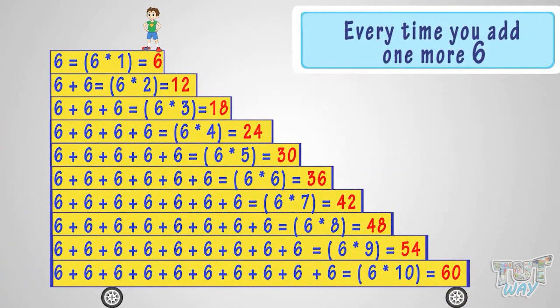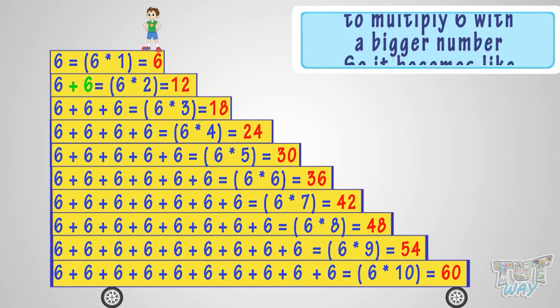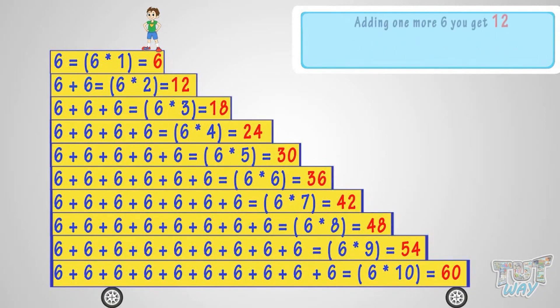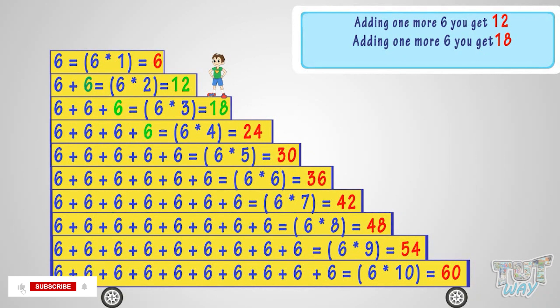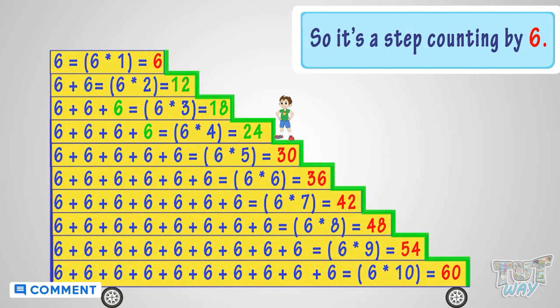We have learned that multiplication is repeated addition. See the figure. Every time you add one more six to multiply six with a bigger number, so it becomes like steps. Adding one more six, you get twelve. Adding one more six, you get eighteen. Adding one more six, you get twenty-four. And so on. So it's a step counting by six.